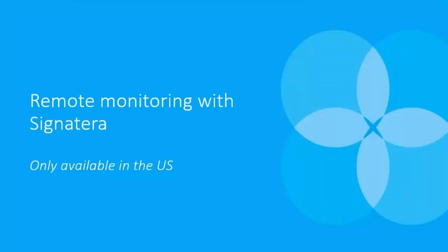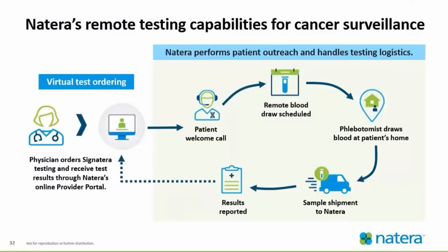Remote monitoring with Signatera is only available in the U.S. This is Natera's remote testing capability. A physician will initially place the order for Signatera testing and receive the test results through Natera's online portal. Once the order is placed, Natera handles the rest — the patient receives a welcome phone call, schedules to have blood drawn at the patient's home, a phlebotomist comes to the home, takes the blood sample, ships it, and results are reported through the portal. It's a simple task: the provider orders the testing and Natera takes care of the rest.